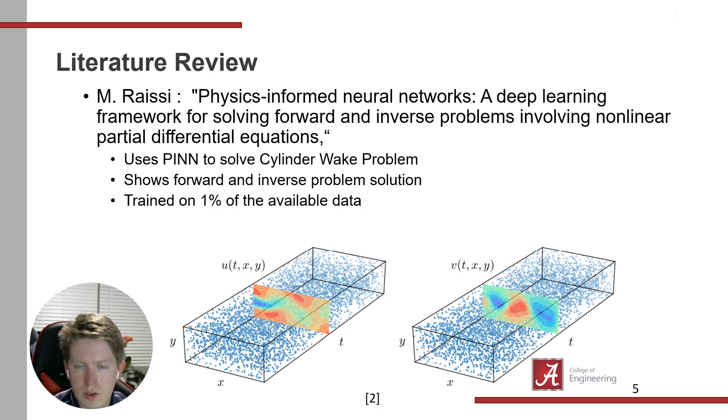Before going further, I want to review literature showing what physics-informed neural networks can do with Navier-Stokes equations. The first paper by Raissi introduced PINNs as a concept and used a PINN to solve the cylinder wake problem. They show that a PINN can be a forward or inverse problem solution. If you give it initialized values, it can compute later states, and inversely, given later states, it can compute the initial values.